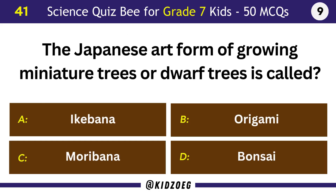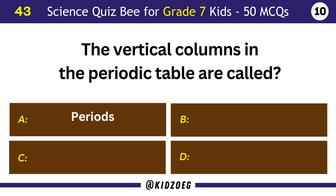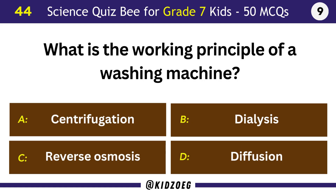The Japanese art form of growing miniature trees or dwarf trees is called Bonsai. Which one of the following spices is a flower bud? Clove. The vertical columns in the periodic table are called Groups.